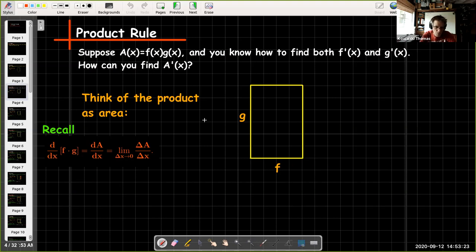So what we're going to do is remember that the derivative of the product, that is dA/dx, will be the limit as Δx goes to zero of ΔA over Δx. So what would be ΔA?